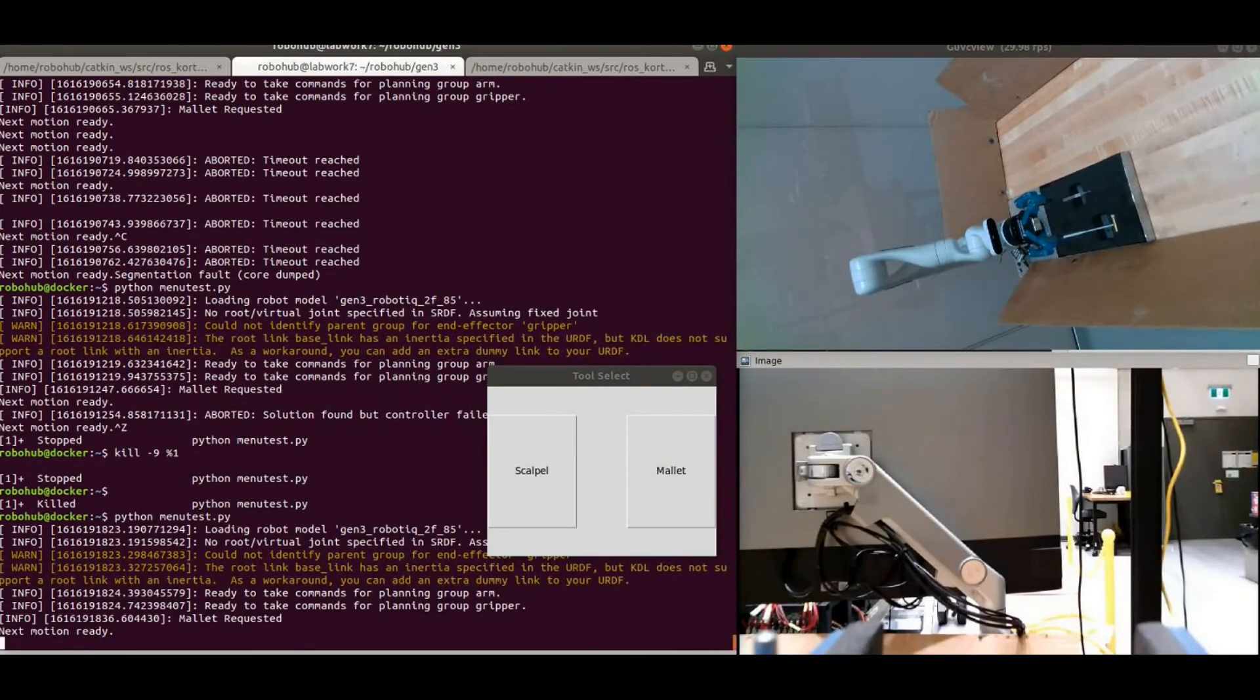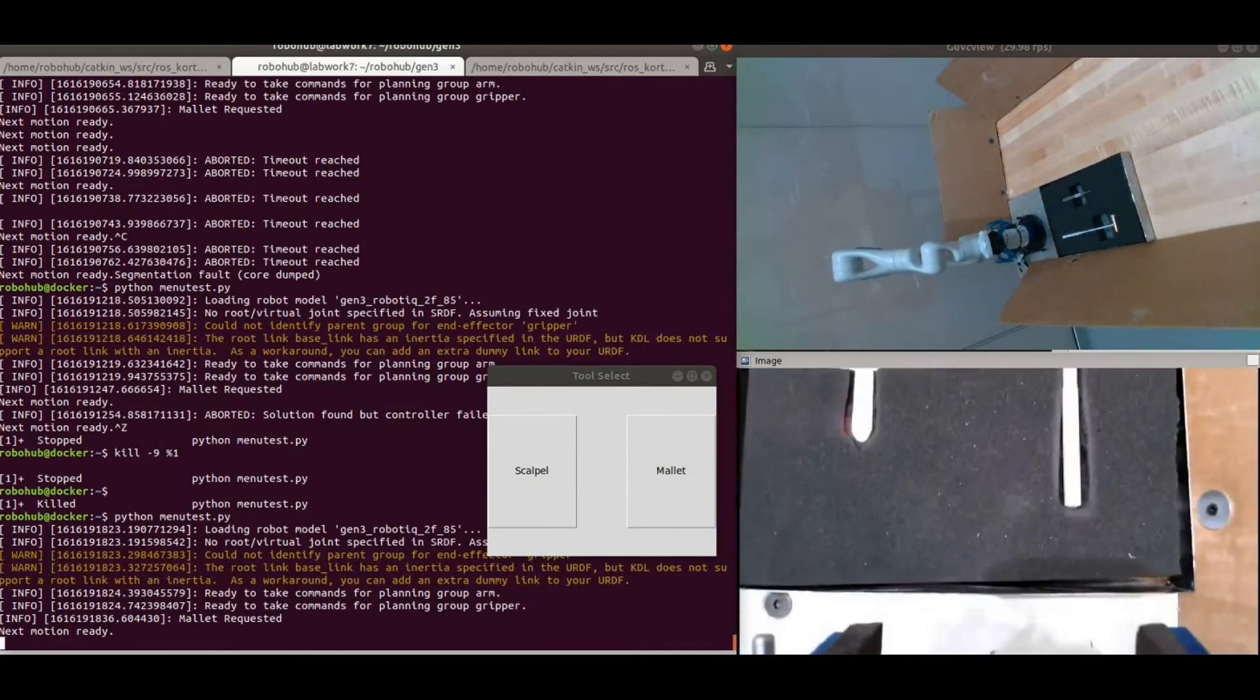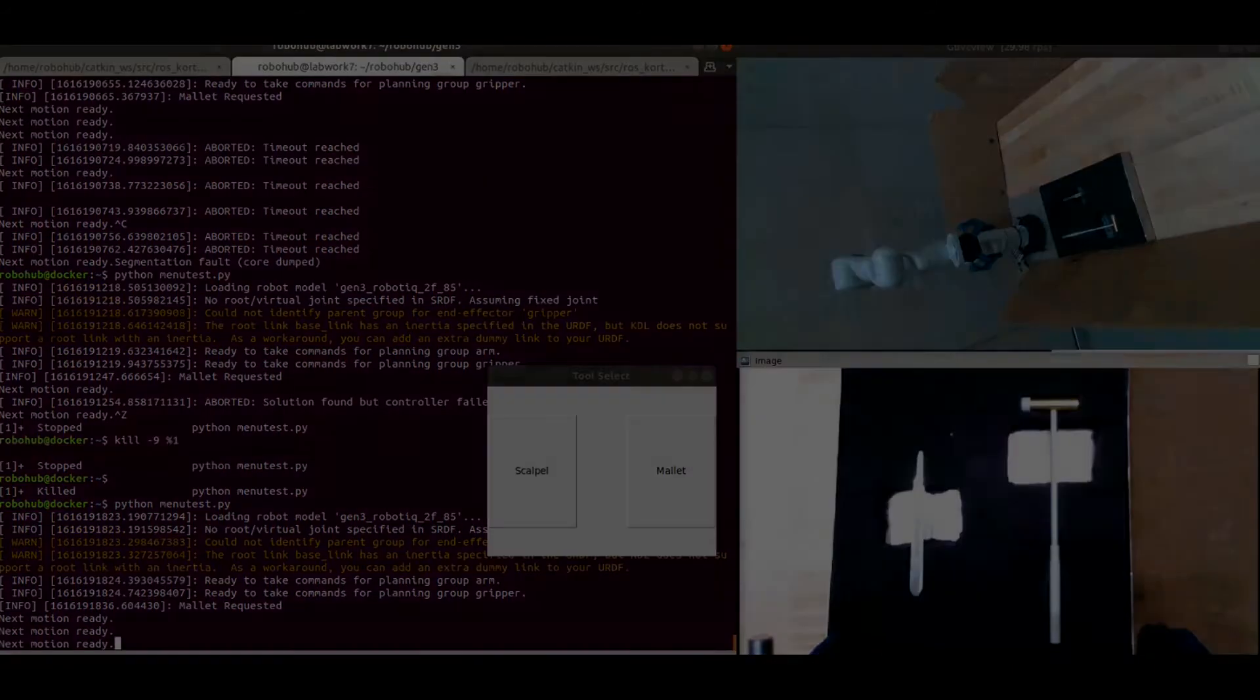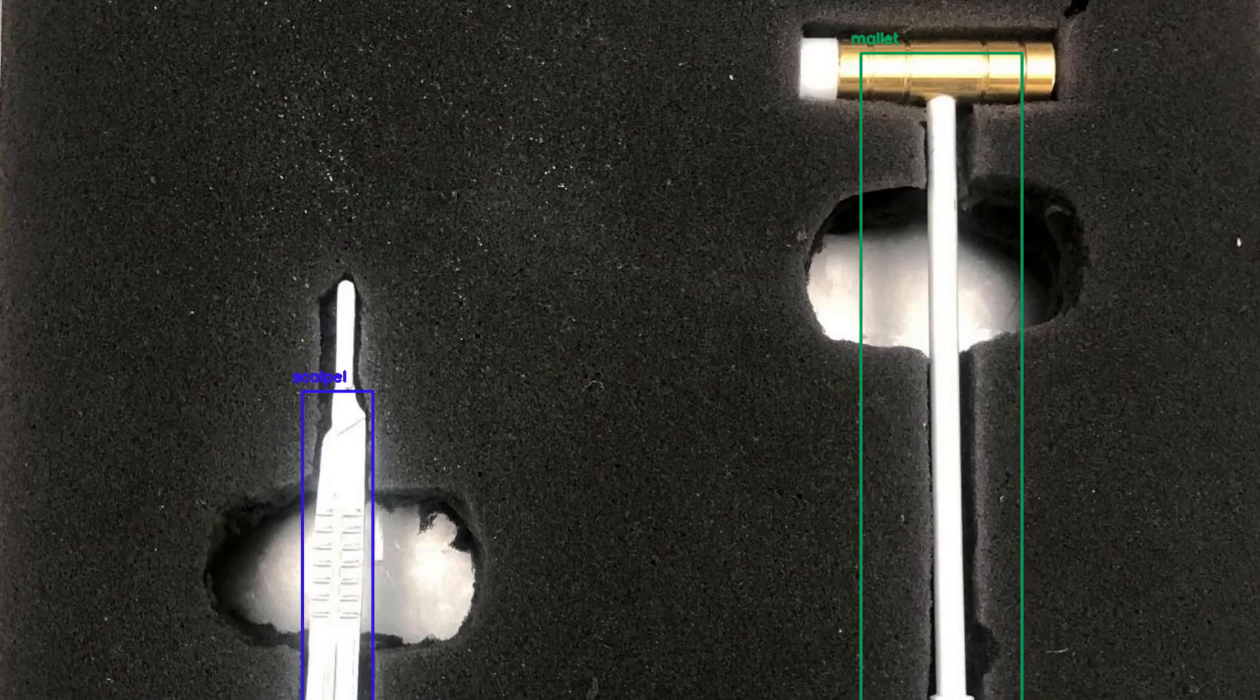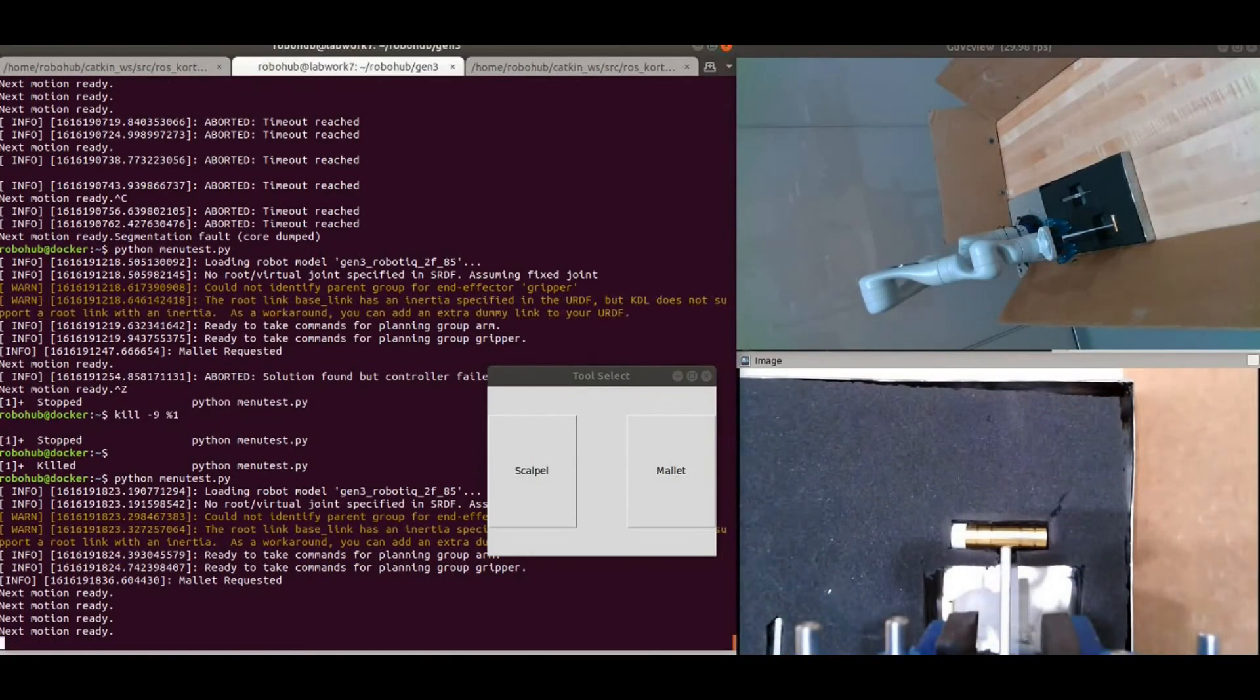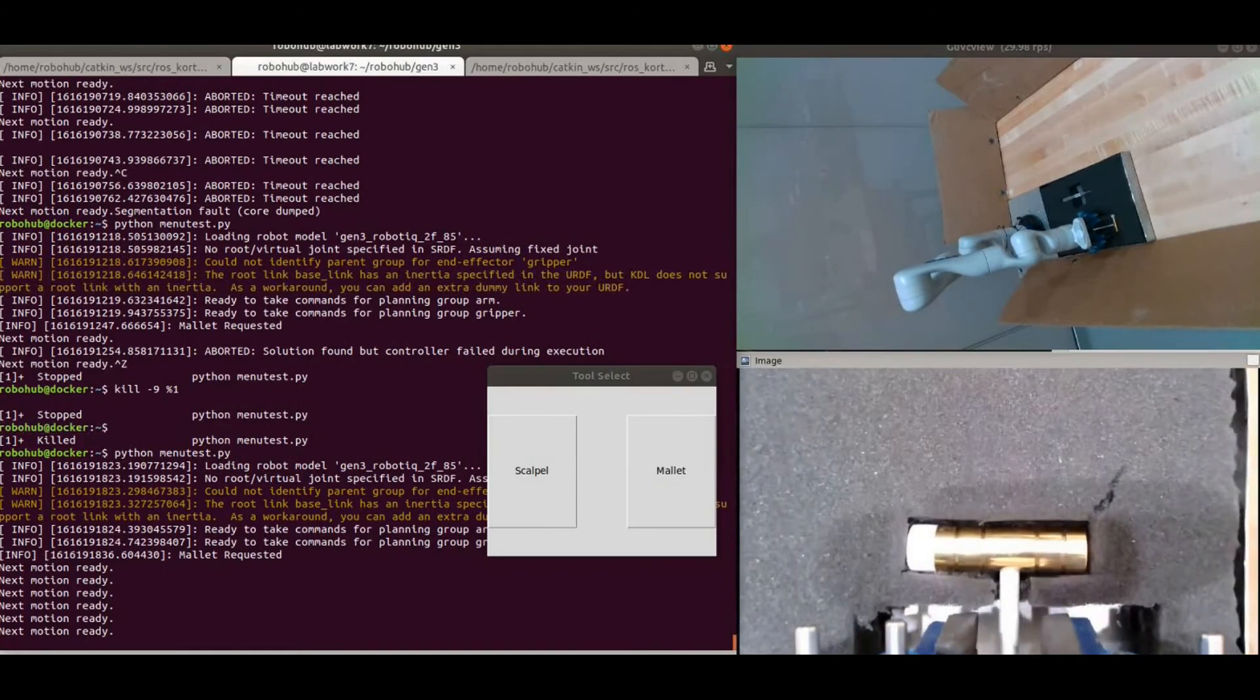Functional verification has no doubt been a challenge for this project. Due to the current circumstances, all operation and validation of robot function had to be performed remotely, which has been made possible through the help from the Robohub team.